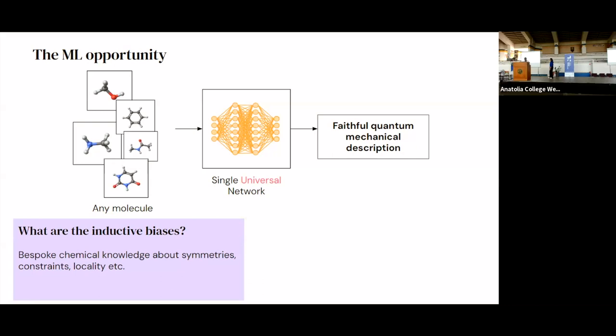And then in terms of what are the inductive biases that enable us to make sure we're learning the right thing. As I mentioned at the beginning, I'm not a computer scientist, so I won't punish you all by trying to describe the intricacies of the model architecture. But what I do know is that we really do bake in bespoke chemical knowledge about symmetries, constraints, locality, many of these quantum chemistry domain specific requirements. And that's why a multidisciplinary approach is really key here to bring together the best of both the scientific domain and machine learning.